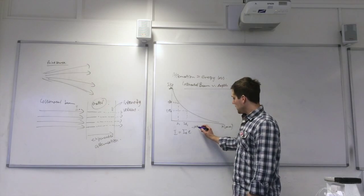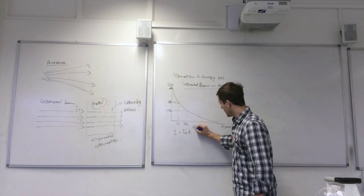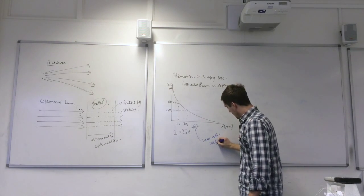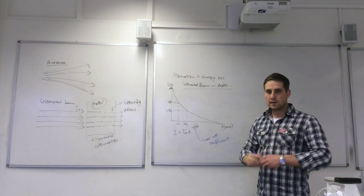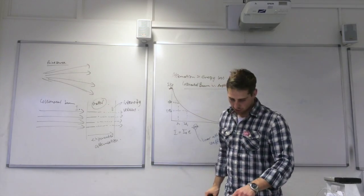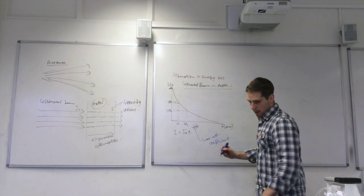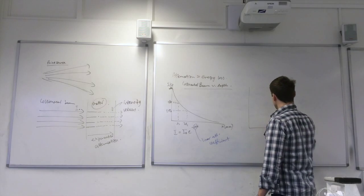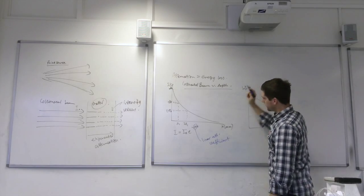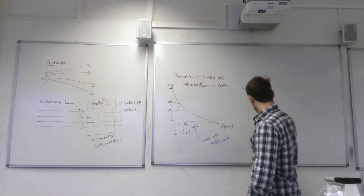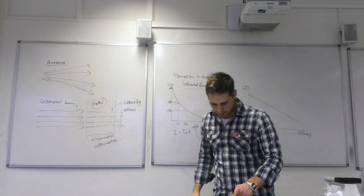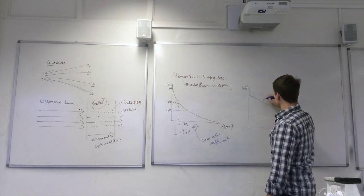The way that you would determine the linear attenuation coefficient is from a log graph. So if you take logs and then plot the log graph, you would get this. So this is log I, and this is x. Plot that, then you can get the linear attenuation coefficient from the gradient.